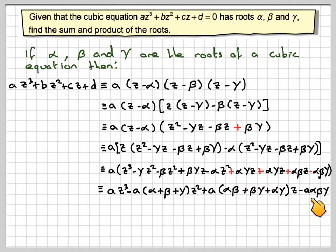Then minus the product here, alpha beta gamma times a. So we get minus a alpha beta gamma.